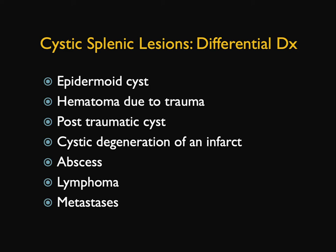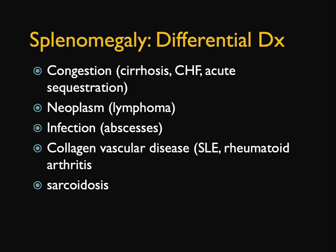When we talk about splenomegaly, the range goes from congestive changes to sequestration, to infection, to sarcoid — many things give you a big spleen. You can see how differential diagnosis — certain facts do help, but they may not be perfect.